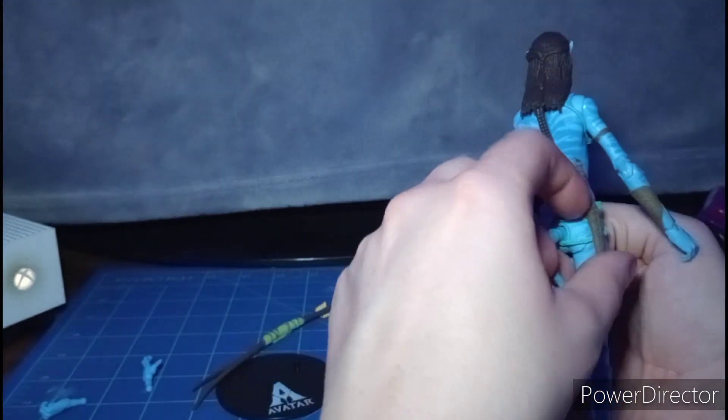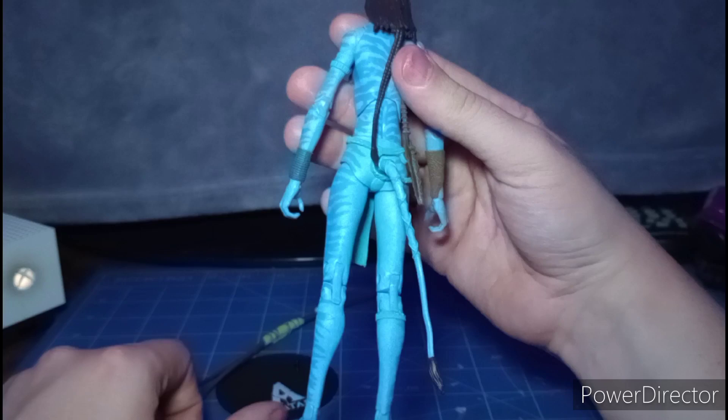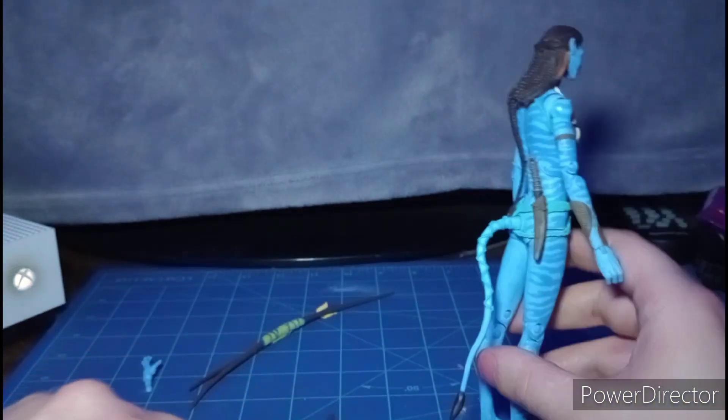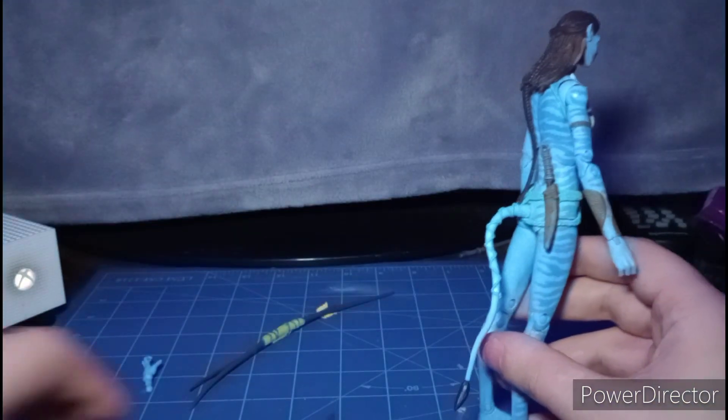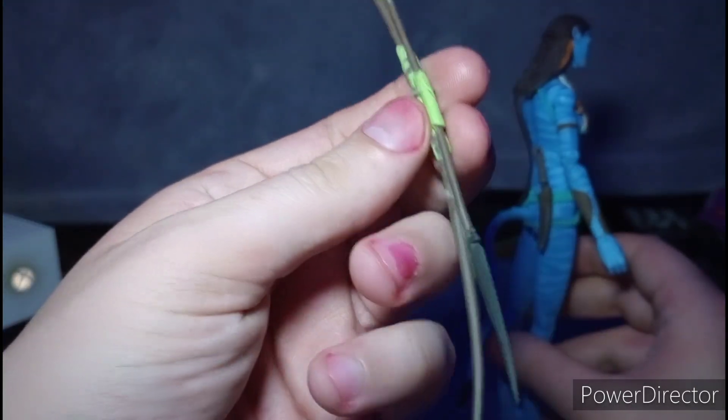But unfortunately, there's a gap. And she has a stand. And her bow. And of course, her arrow is molded on.